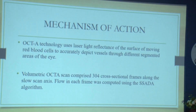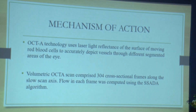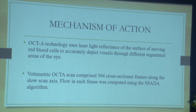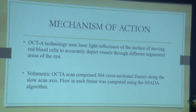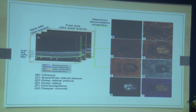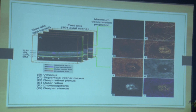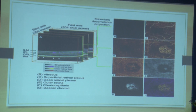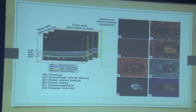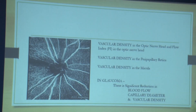OCTA uses low coherence laser light reflectance and images moving blood cells within the vessels — that is how it depicts blood vessels in the retina. It takes fast axial scans in the same location repeatedly, and by comparing these sequential images, it detects flow.